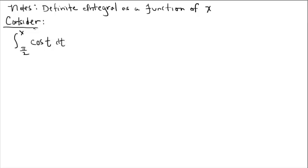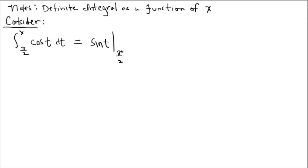Our objective in this video is to see what effect having a variable limit has on our answer to this definite integral. We're going to proceed as if we did have a numeric limit. This problem is prompting us to solve it by finding an antiderivative and evaluating it at the lower and upper limits.